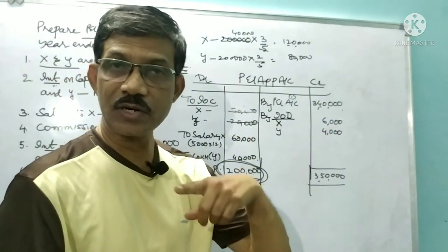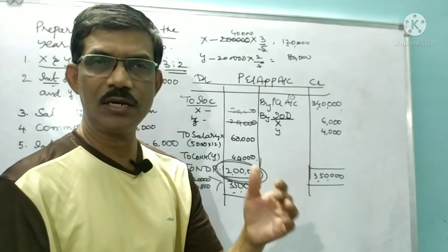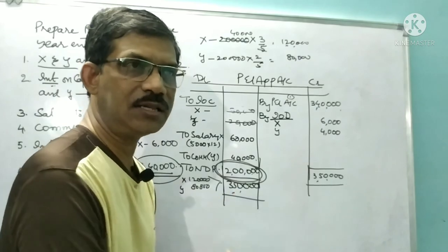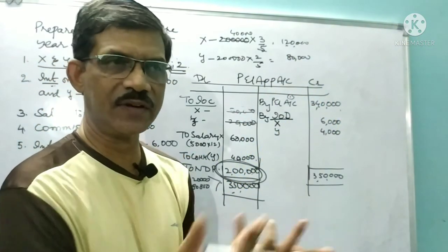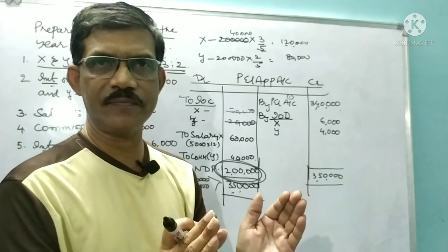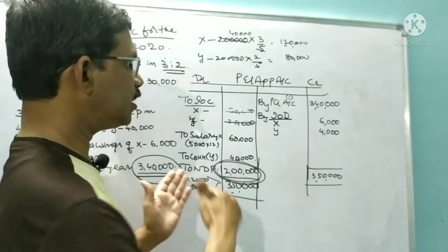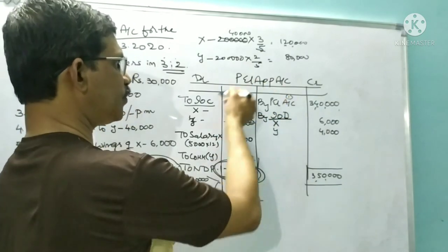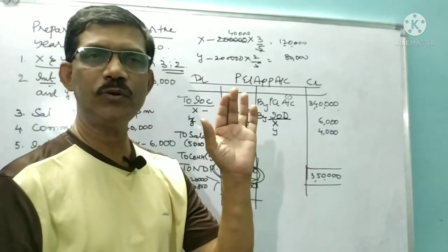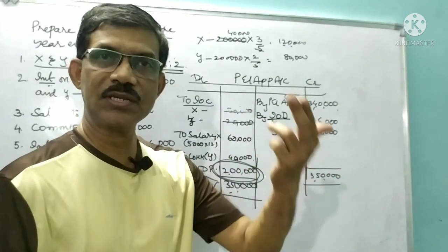The balance sheet is defined as a statement showing true and fair financial position. But if there are mistakes, the true and fair financial position is not shown — we are not fulfilling the objective and purpose of the balance sheet. So if any mistakes are there in P&L appropriation account, how to rectify them? What is the method?